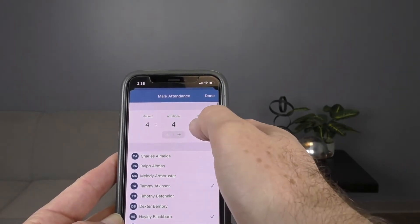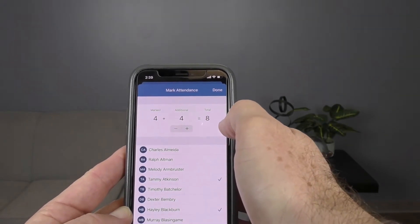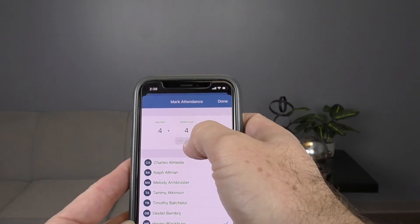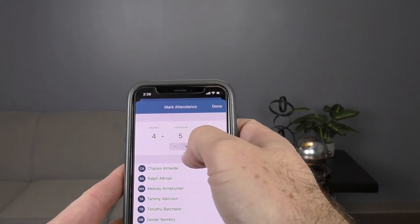So all you do is go through the list here and you're going to check the folks that are present. You'll notice as I do that, it populates up here on the top—the numbers populate. And then if you have any guests, people that are not on your role, you simply add them manually by hitting the plus button.